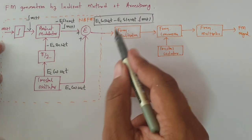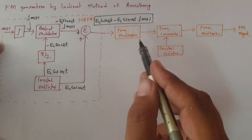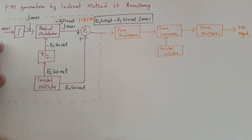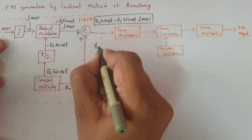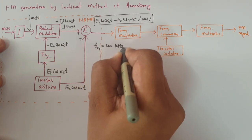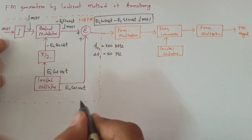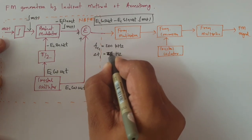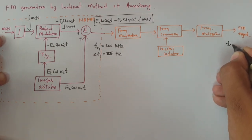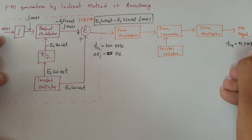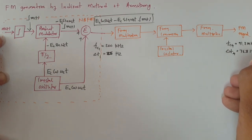This narrowband FM signal will be given to the frequency multiplier, then frequency conversion, and again a frequency multiplier. Let us understand this with an example. If the narrowband FM signal has carrier frequency Fc1 = 200 kHz and frequency deviation ΔF1 = 25 Hz, and the desired FM output should have carrier frequency Fc4 = 91.2 MHz and frequency deviation ΔF4 = 76.8 kHz.